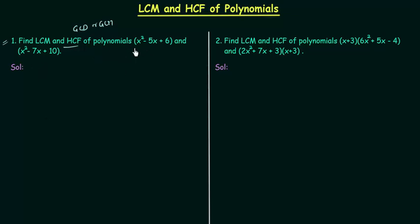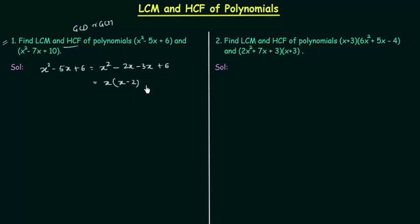Let's start with the solution. The first polynomial is x² - 5x + 6, and I can write it as x² - 2x - 3x + 6, since -2x - 3x equals -5x. I can take x common from the first two terms, giving x(x - 2), and then take -3 common from the last two terms. Since (x - 2) is common, we have (x - 2)(x - 3).